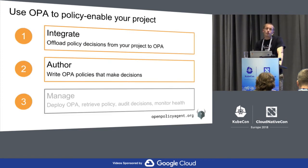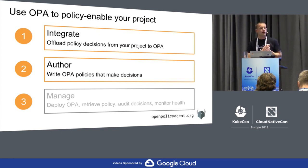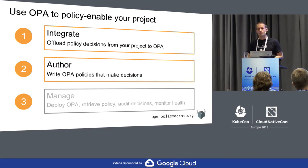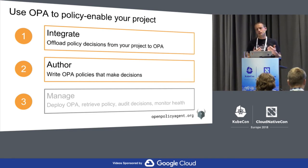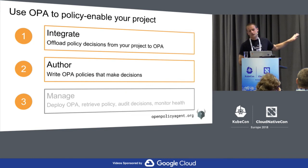When you go to use OPA to policy-enable a project or service — its goal is to make it very easy to add rich, fine-grained context-aware policy to an existing project or service — there are three conceptual steps. First: how do you integrate OPA with that external project, whether it's Kubernetes, Linux, or Terraform? Second: you author policy, and that's what we're going to spend most of the time on today. Third: you manage OPA — how do you deploy it, retrieve policies, audit decisions, monitor health. We're not going to touch on that at all today.